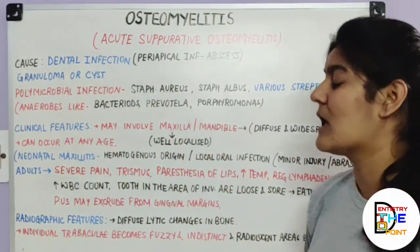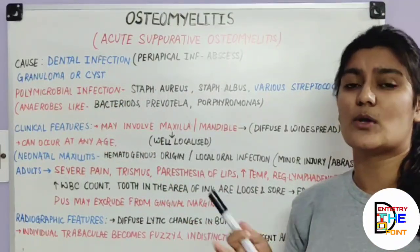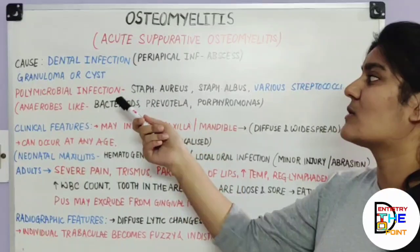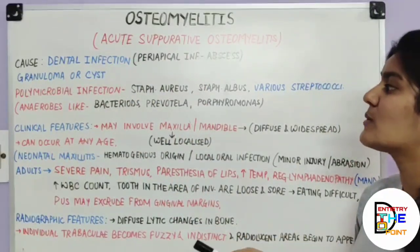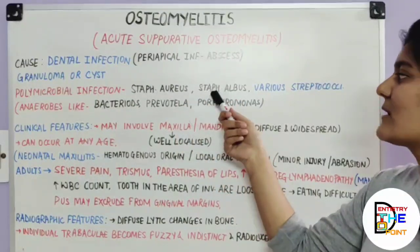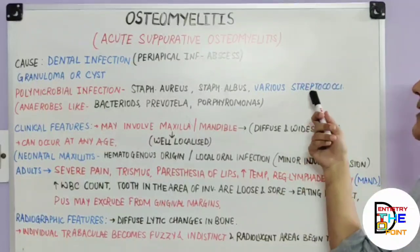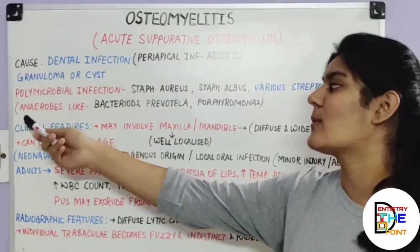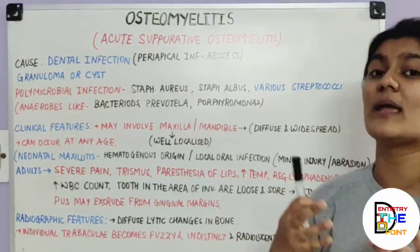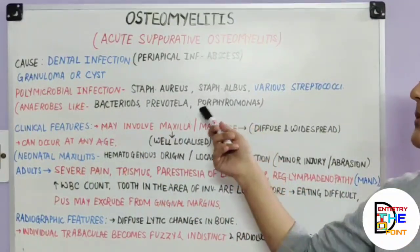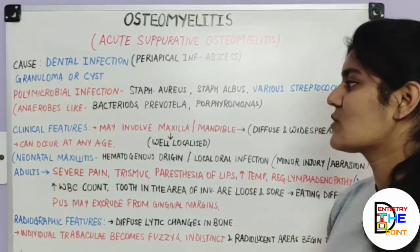Acute suppurative osteomyelitis is a polymicrobial infection — involving many organisms. The most common organisms isolated are Staphylococcus aureus, Staphylococcus albus, and various streptococci. Anaerobes such as Bacteroides, Prevotella, and Porphyromonas may also be predominant microbial factors.